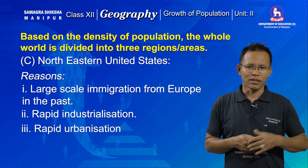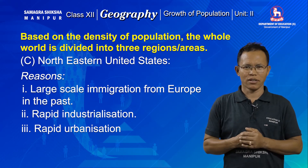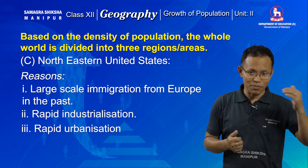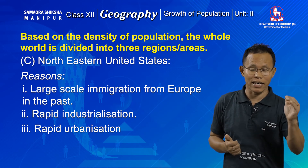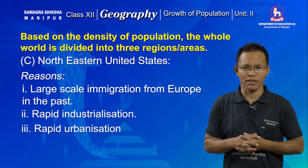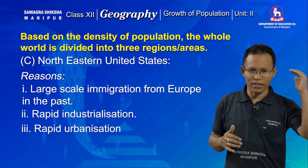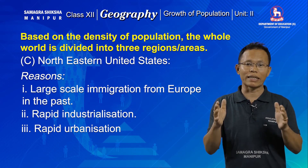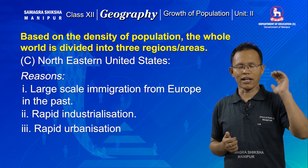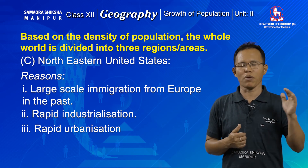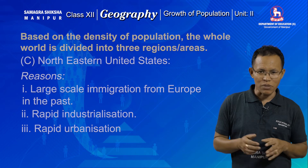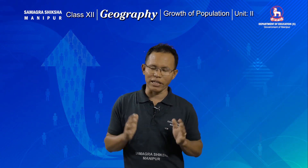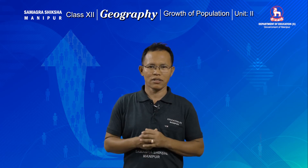Urbanization is very high and the process of urbanization is accompanied by population growth. Urban centers can accommodate large populations compared to their rural counterparts. These are the important points regarding areas of higher population density across the world. That is all for today. Next time I will proceed with the remaining part of this topic. Thank you.